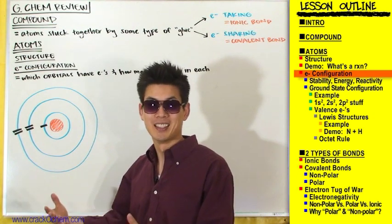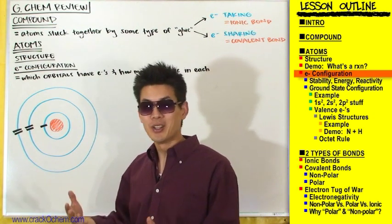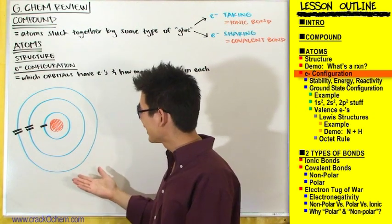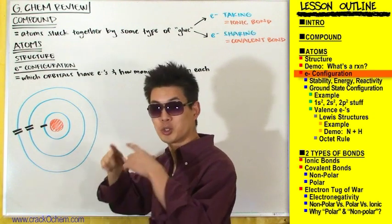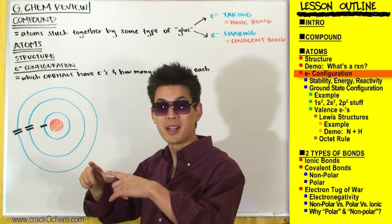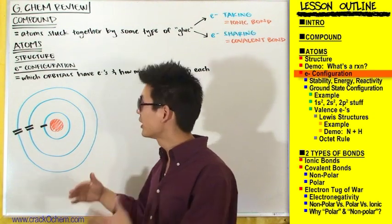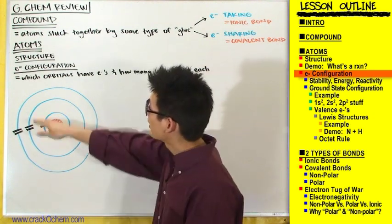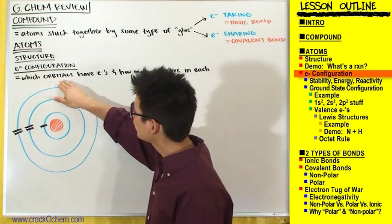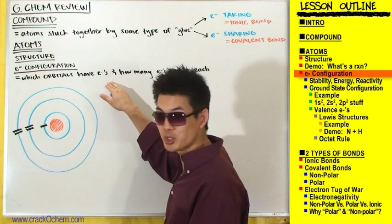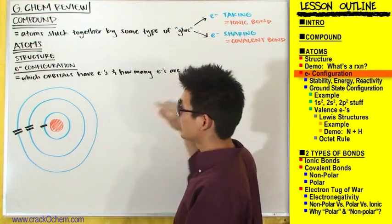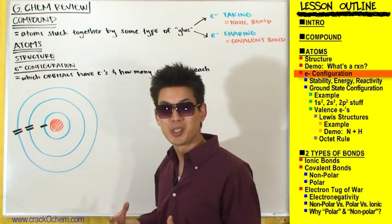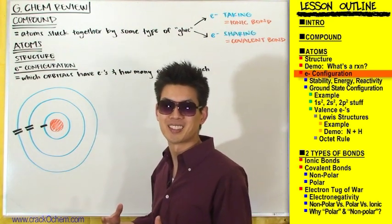Go ahead and fill out those green empty boxes, then we'll come back and talk about which of those orbitals have electrons in them and how many electrons are going to be in each one of those orbitals.